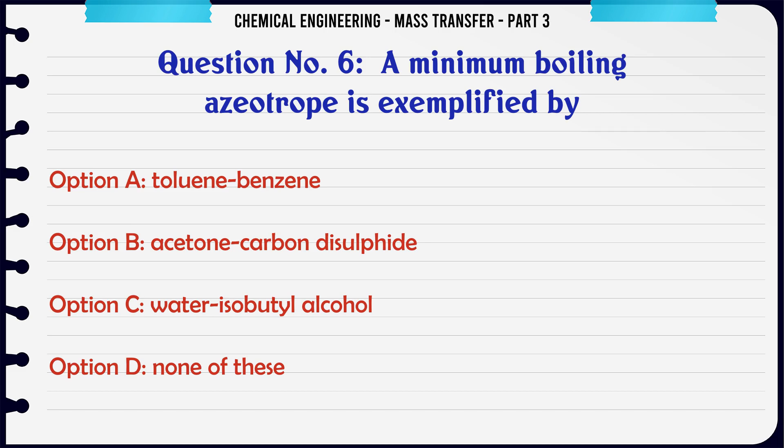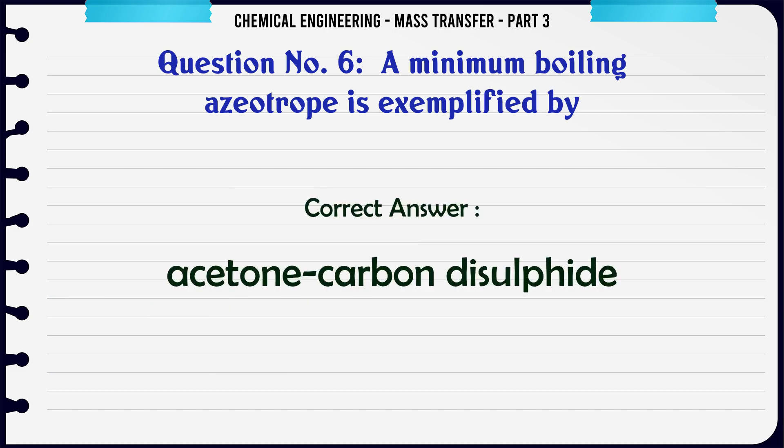A minimum boiling azeotrope is exemplified by: A) toluene-benzene, B) acetone-carbon disulfide, C) water-isobutyl alcohol, D) none of these. The correct answer is: acetone-carbon disulfide.